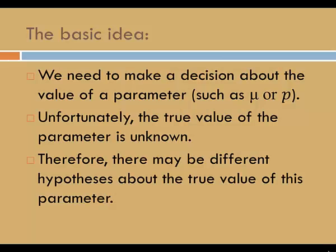Here's the basic idea. We need to make a decision about the value of a parameter, such as mu or p — that's the population mean or the population proportion. Unfortunately, the true value of the parameter is unknown. Therefore, there may be different hypotheses about the true value of this parameter.